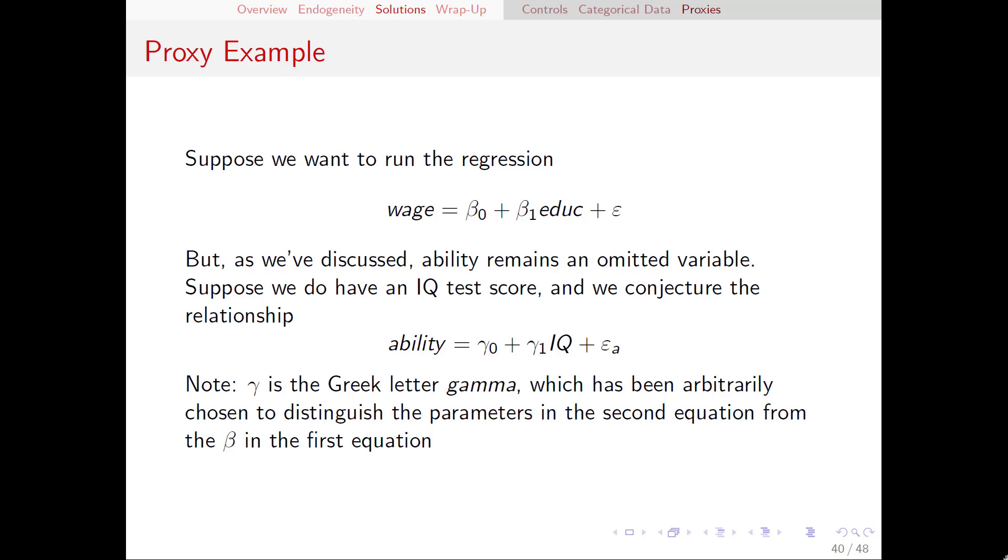Suppose that we have IQ test scores and we think that there is a relationship between ability and IQ, specifically this equation right here where we have ability equals gamma naught plus gamma 1 IQ plus epsilon A. What we're saying here is that ability is explained in part by IQ, that's the gamma 1, but not fully by IQ. The rest of ability comes from epsilon A.